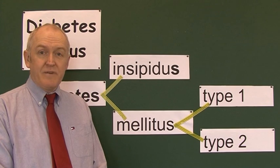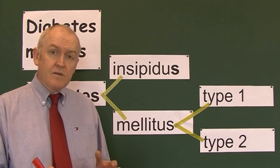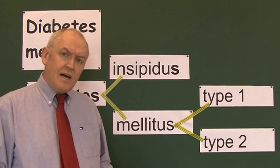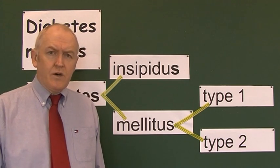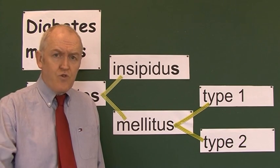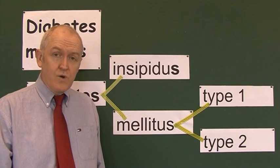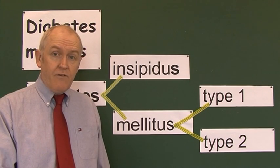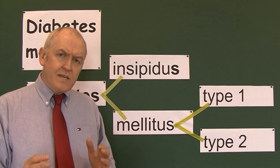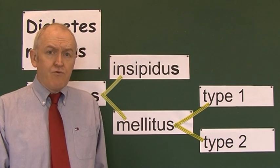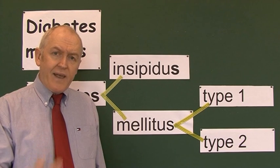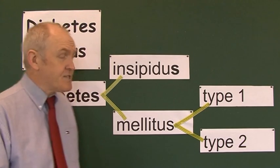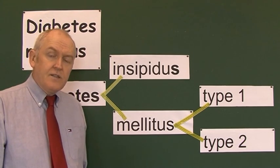Welcome to this talk on diabetes mellitus. Diabetes is an old English word meaning 'to go through' or 'to flow through.' It was sometimes used to describe a siphon where water is siphoned off, so what the word diabetes really means is polyuria — water is flowing out of the body, there's a large urine volume.